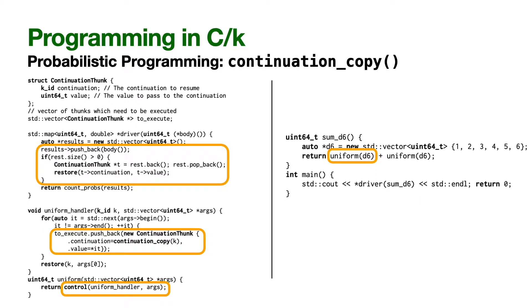The final example shows how to build a probabilistic programming language embedded in C++. In order to simulate sampling from a distribution, we need to be able to re-execute a captured continuation multiple times. To do this, we use the special continuation copy function provided by CK.